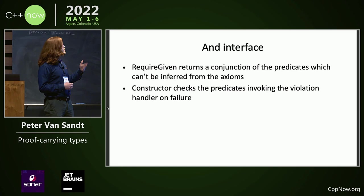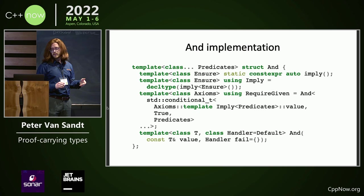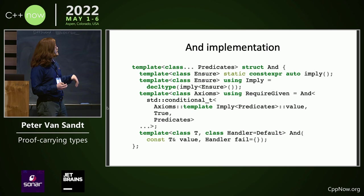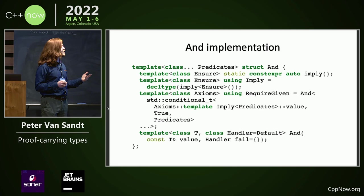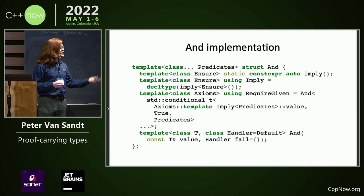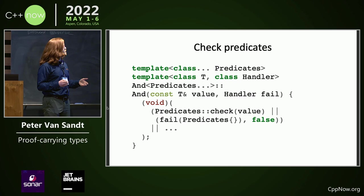In terms of AND, its interface is require-given, as we've seen, and a constructor that checks its predicates given some violation handler. Imply we will see later. Require-given maps anything which is not implied by the axioms — where the axioms do not imply the predicates — to true, and otherwise it retains the predicate. Here we check our predicates using a basic expansion, and then on failure of the predicate we invoke the failure handler.